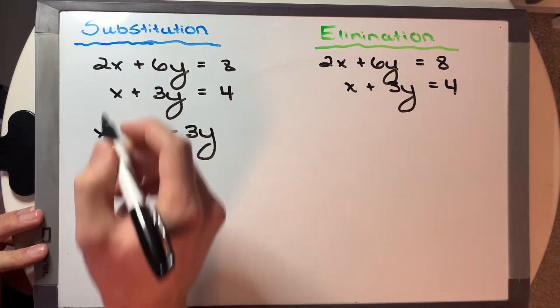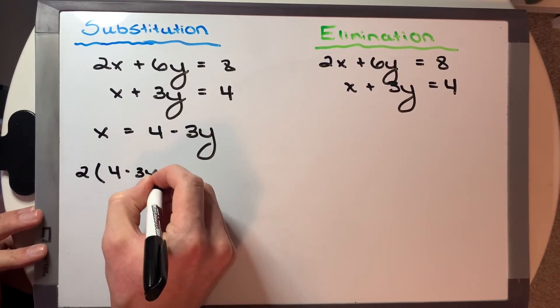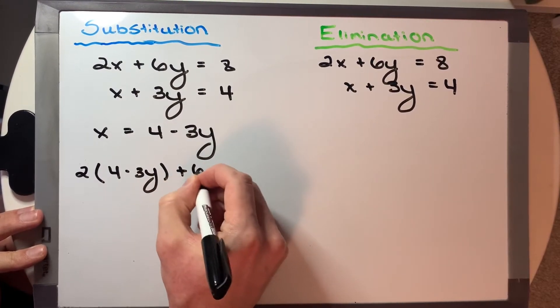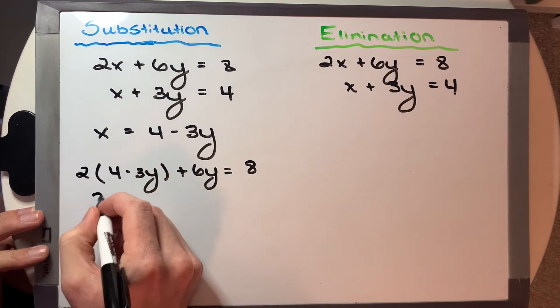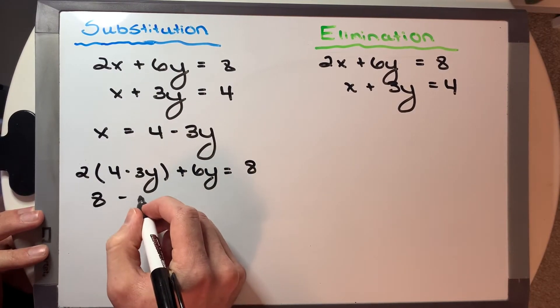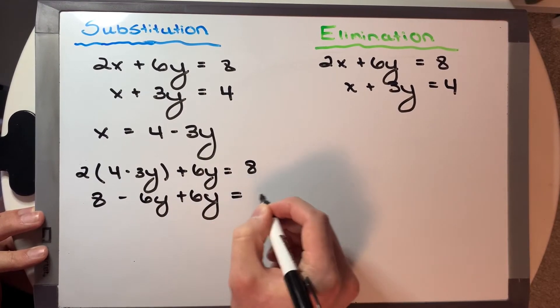Now let's sub this x into the top equation. So 2 times (4 minus 3y) plus 6y equals 8.